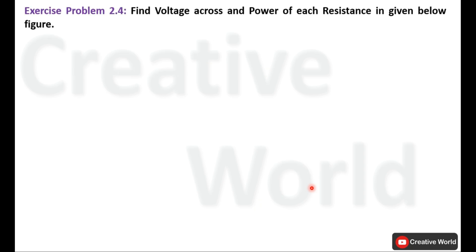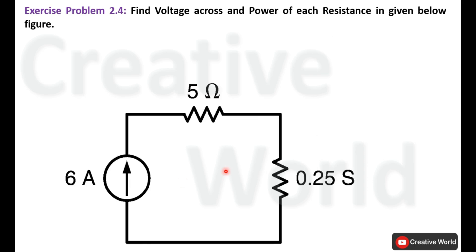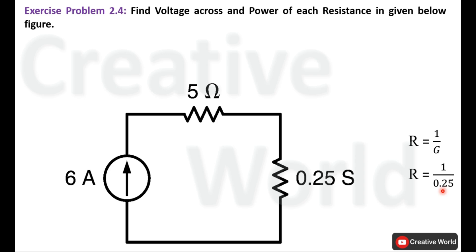Move towards problem number 2.4: find voltage across and power of each resistance in the given figure. Again, the value of one resistance is given in Siemens instead of ohms, so first we convert using R equal to 1 divided by G. Entering the conductance value of 0.25 Siemens gives a resistance of 4 ohm. We replace the conductance value with 4 ohm and proceed.